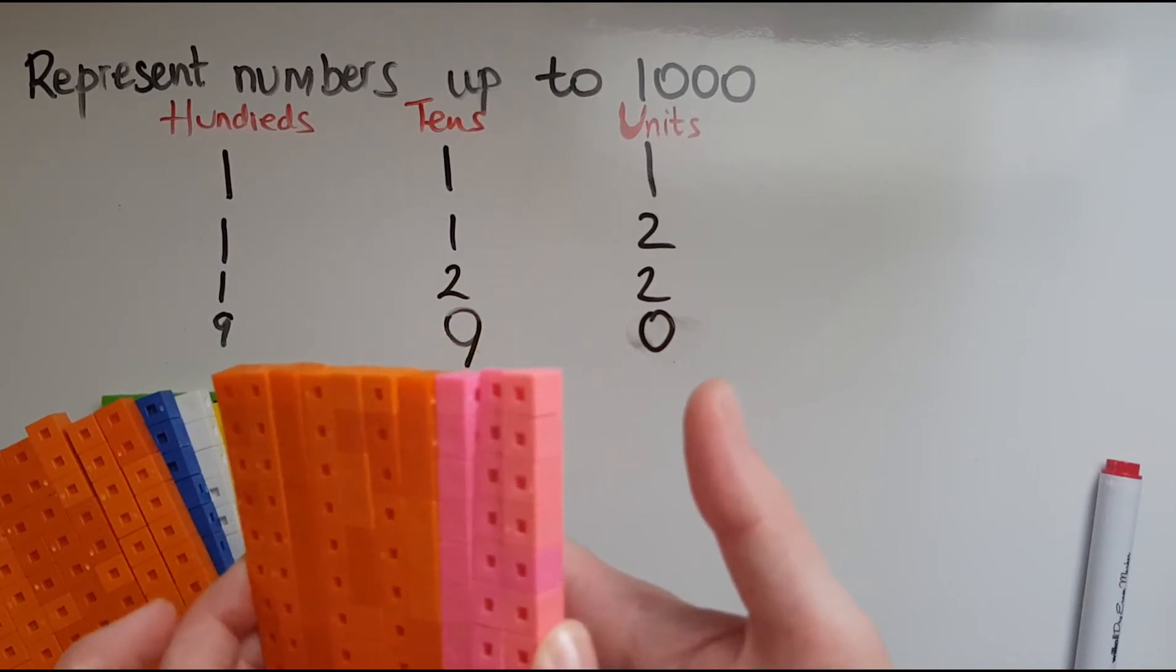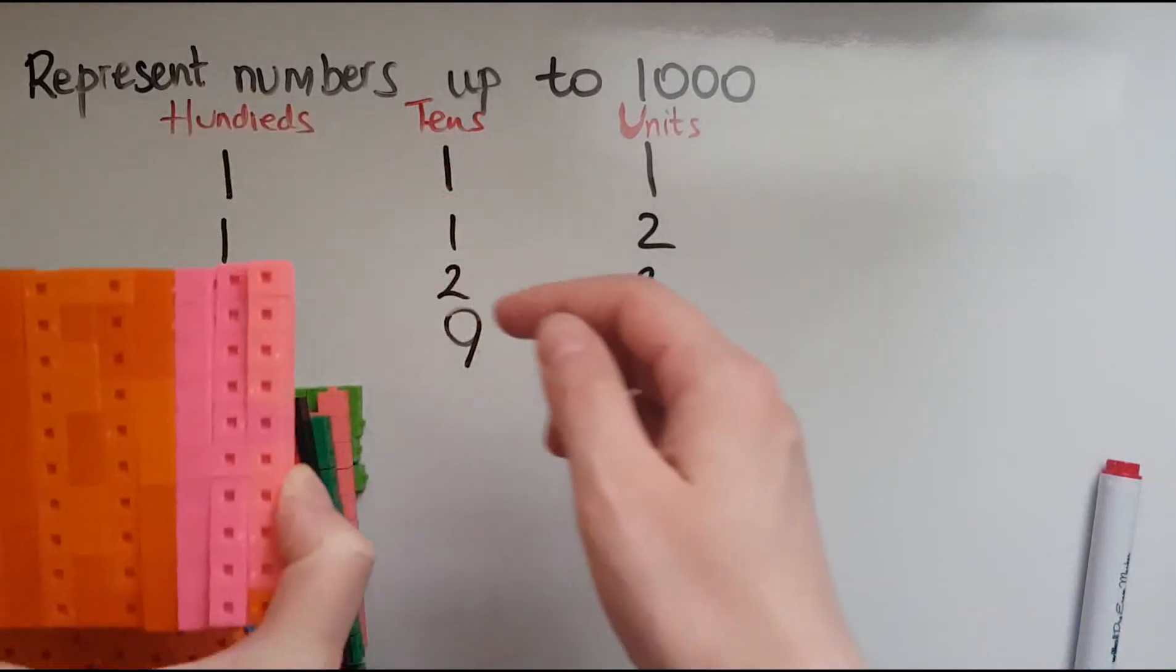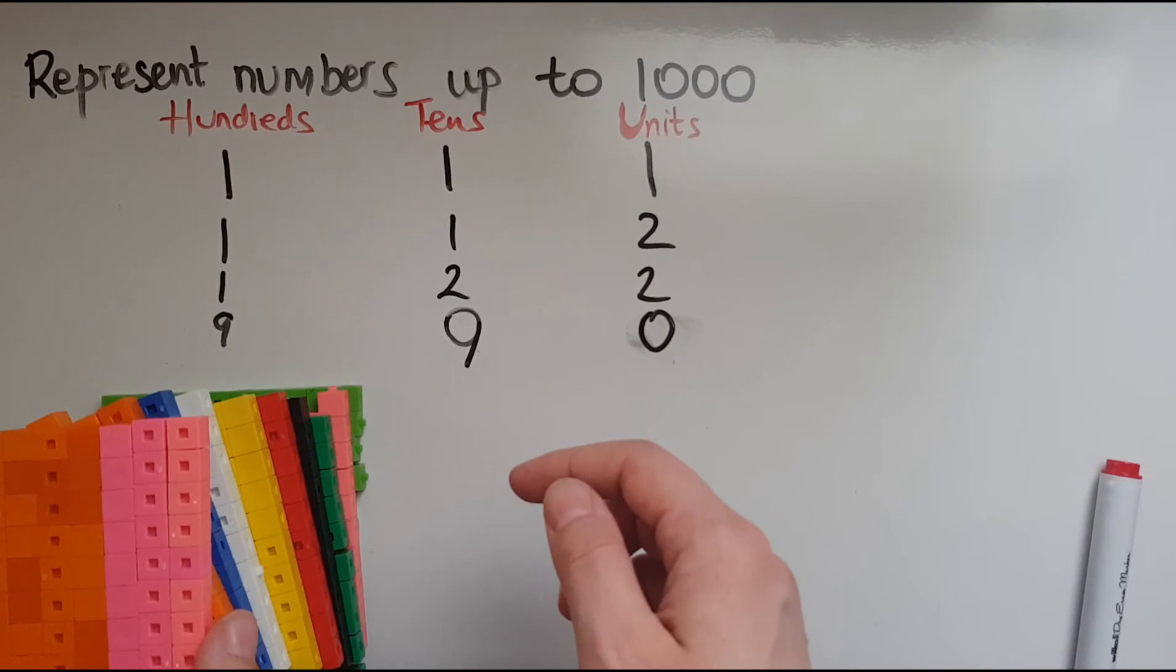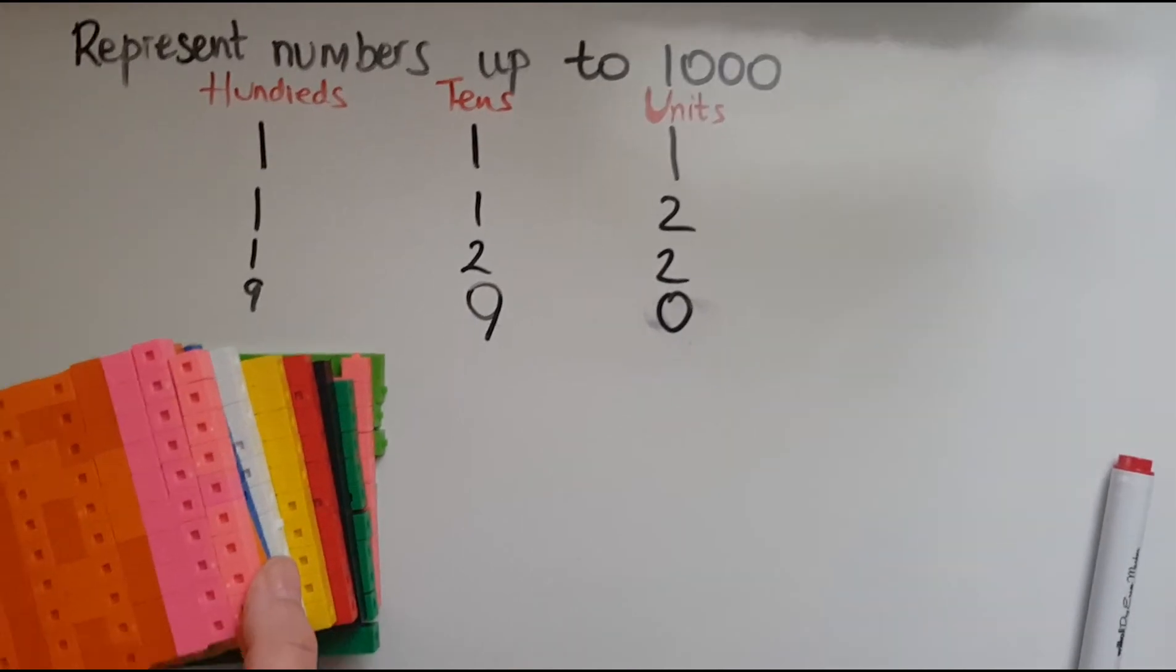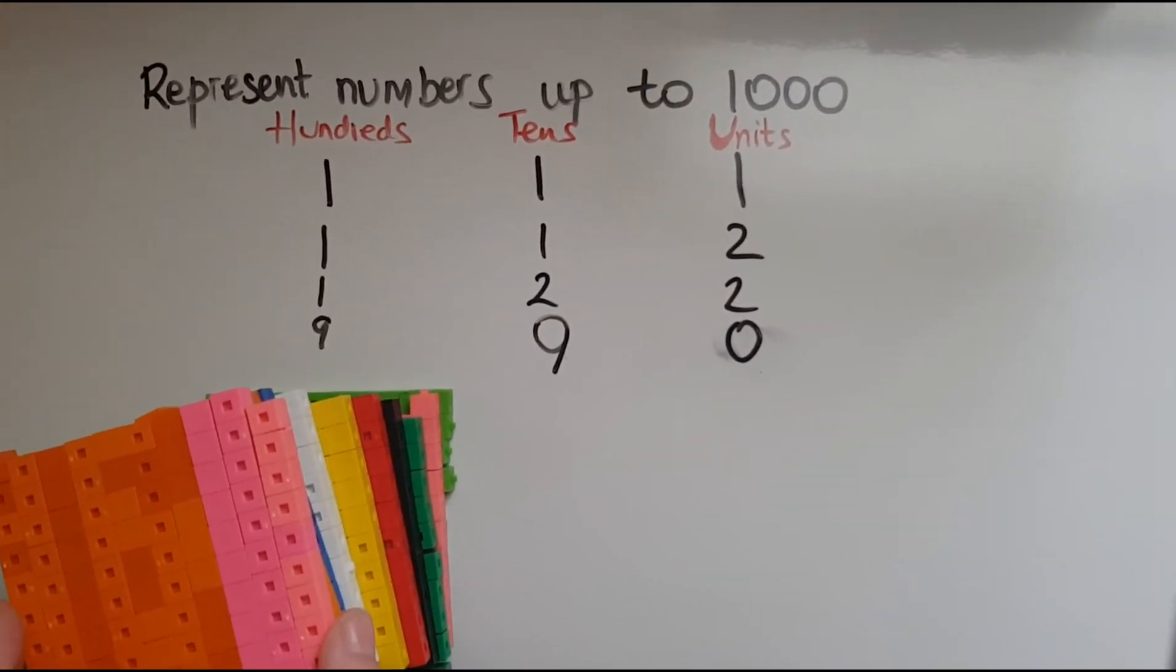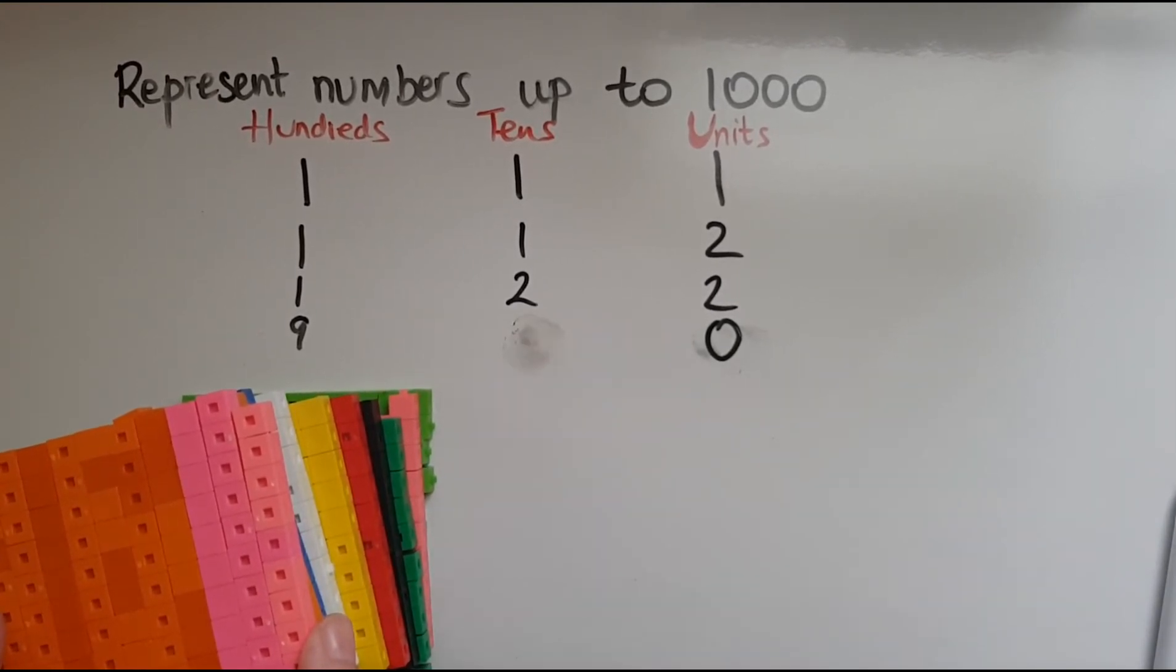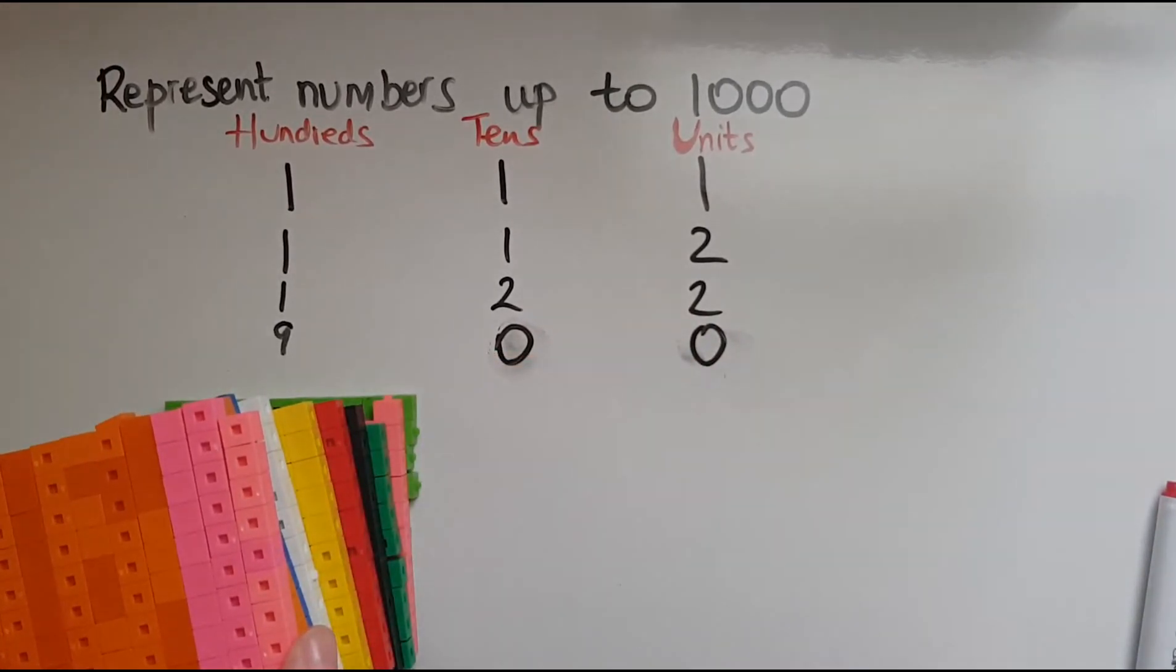So I'm going to have to put it on top of the hundreds. So I'm going to have it here as a block of a hundred and I'm going to need to change this digit to a zero because there are no tens any longer and I transfer them to the hundreds.